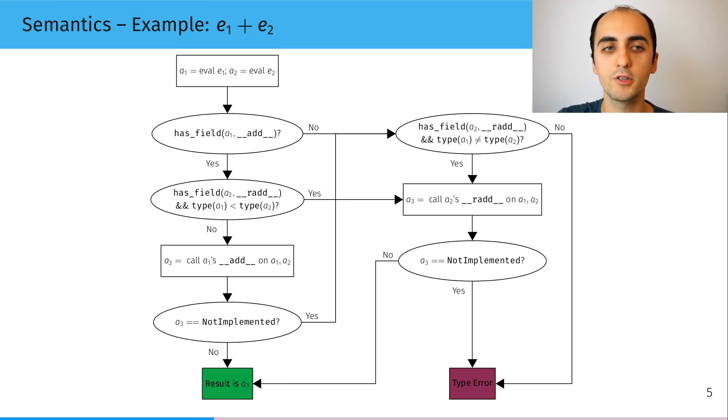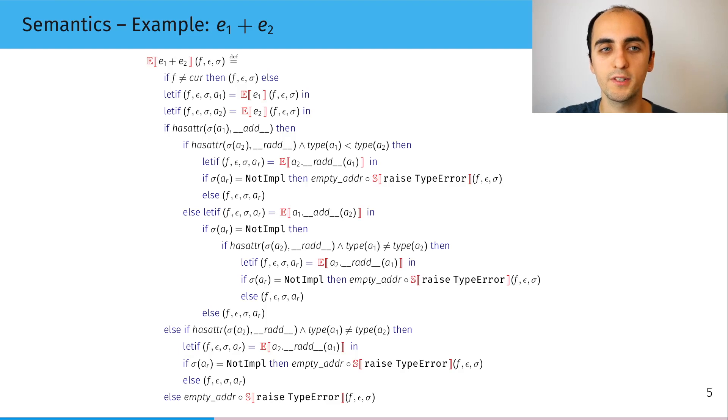So this is a flow chart, but we also have a more formal semantics, an input-output semantics written down on paper.